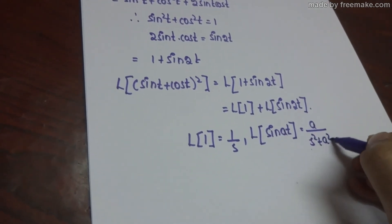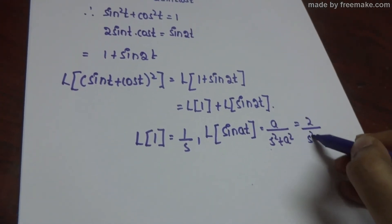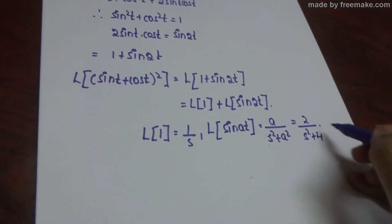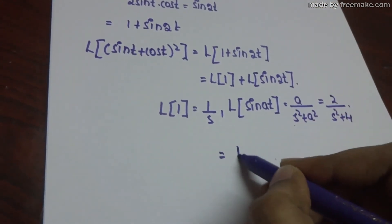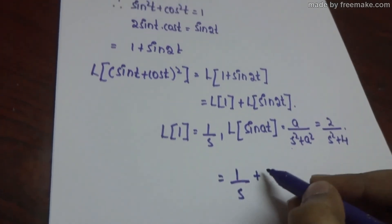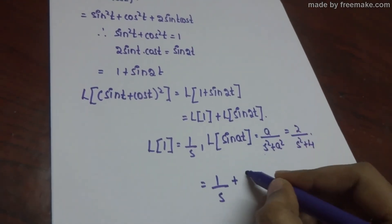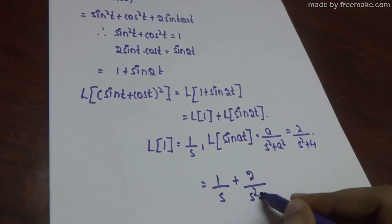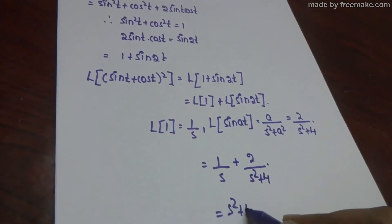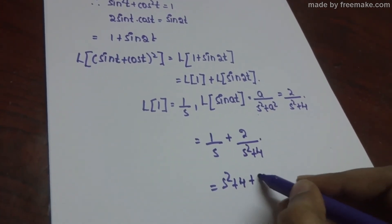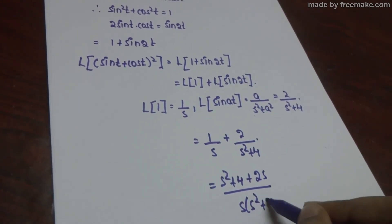Here a is 2, so Laplace of sin 2t is 2 by s square plus 4. Applying these two results: Laplace of 1 gives 1 by s, plus Laplace of sin 2t gives 2 by s square plus 4. Now cross multiplying: the final answer is s square plus 4 plus 2s, all over s into s square plus 4.